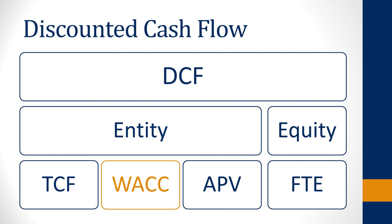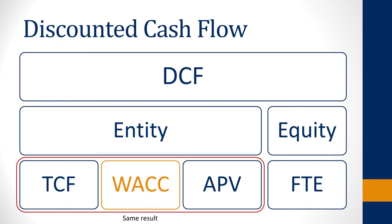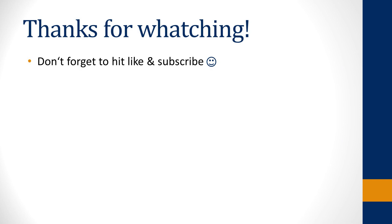There is one more thing to note: since there are several different methods of discounted cash flow, one differentiates between the entity and the equity method. The equity method — also called flow to equity — only considers the payments the buyer receives, but it is hardly ever used. The entity methods calculate the value of the company and adjust for debt financing. All entity methods should yield the same result, just using different approaches. Since the WACC method is most commonly used, we explained the discounted cash flow using this method. We hope you enjoyed this video — if you did, hit like and subscribe to our channel. Goodbye.